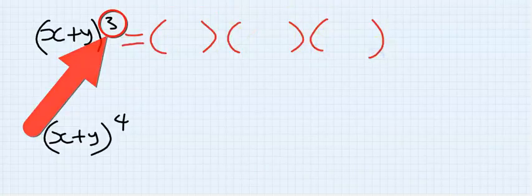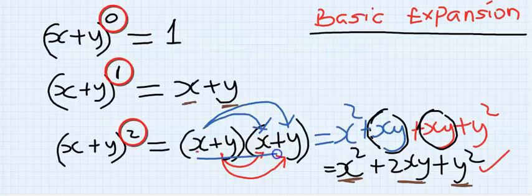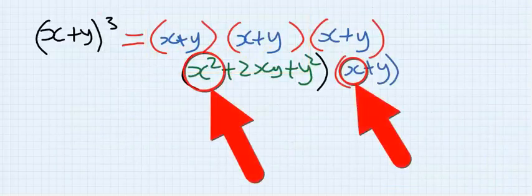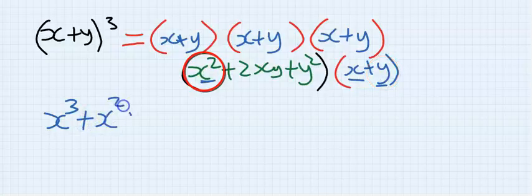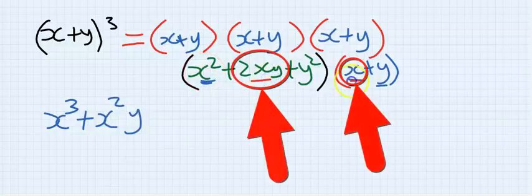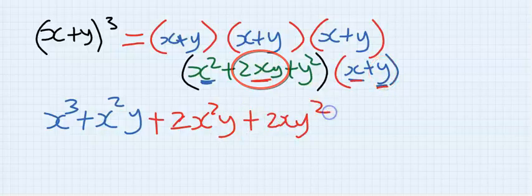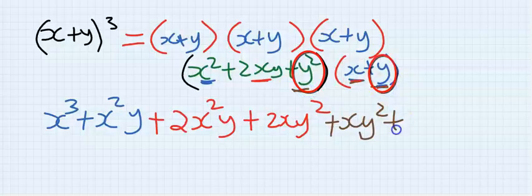For (x + y)³, we write it as (x + y)(x + y)(x + y) — three places. We have already done the expansion for two brackets, so we take that result and multiply by the remaining (x + y). This gives: x³, then x²y, then 2x²y, then 2xy², then xy², and finally y³.